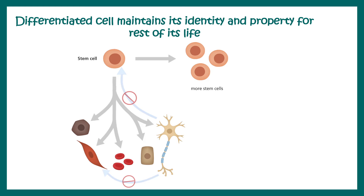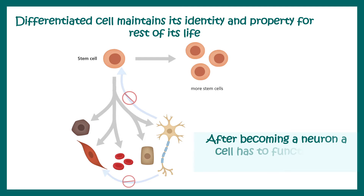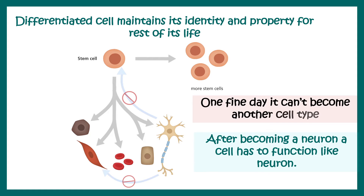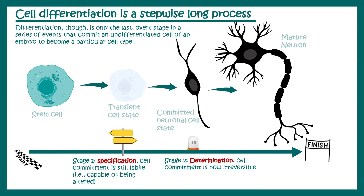The biggest thing about differentiation is that it cannot revert its identity once differentiated. After becoming a neuron, the cell has to function like a neuron for the rest of its life — you cannot find a neuron becoming muscle, or a neuron reverting back to a stem cell. A differentiated cell maintains its functional identity for the rest of its life, but this differentiation process is not at all easy.